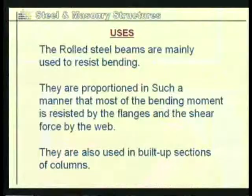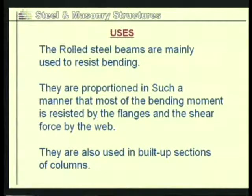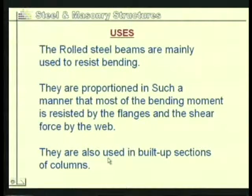I beams are mainly used to resist bending, which is why they are also known as beam sections. The I section is proportioned such that the web carries the shear force, whereas the top and bottom flanges carry the bending. Apart from being used as beams, they can also be used for built-up sections in columns.